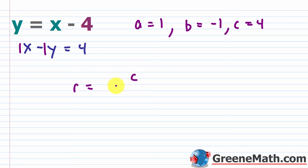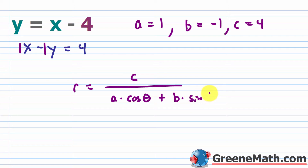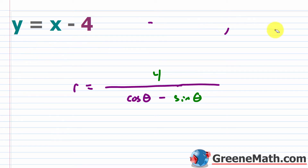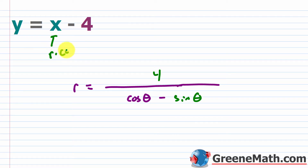Plugging into the formula r = c / (a·cosθ + b·sinθ): with c = 4, a = 1, and b = −1, we get r = 4 / (cosθ − sinθ). If you had substituted directly — plugging r·cosθ for x and r·sinθ for y — you would arrive at the same result, confirming both methods agree.